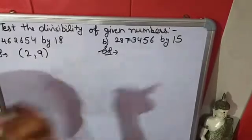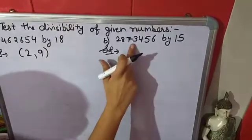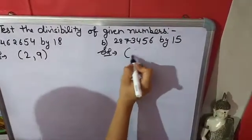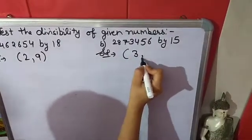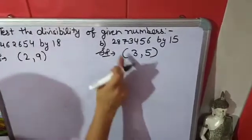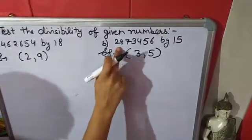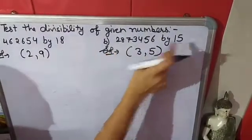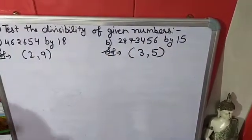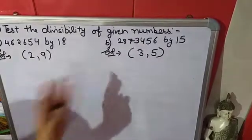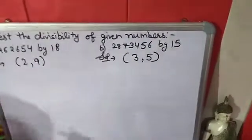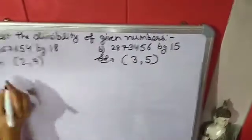In the case of 15, if a number is completely divisible by both 3 and 5, then it is completely divisible by 15. We have to check these using divisibility rules.